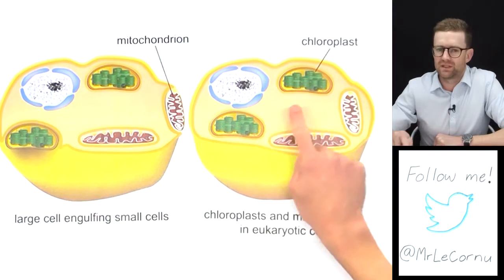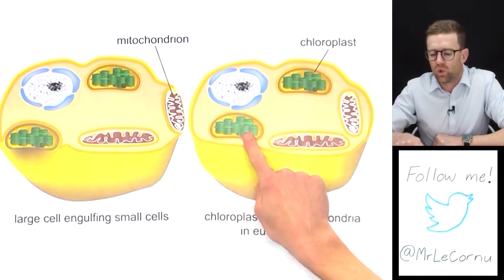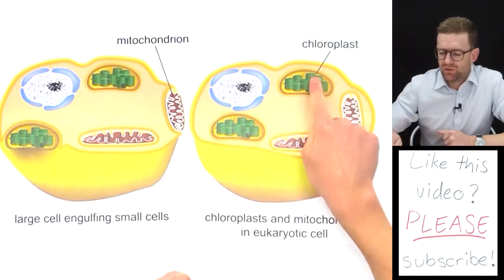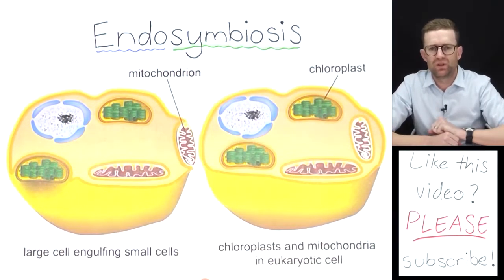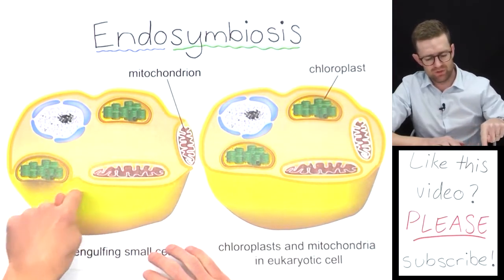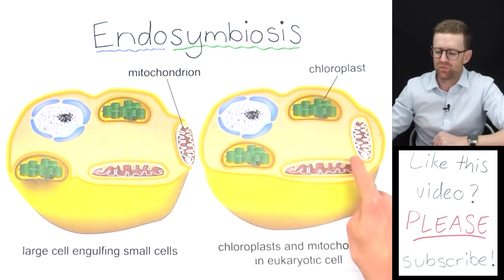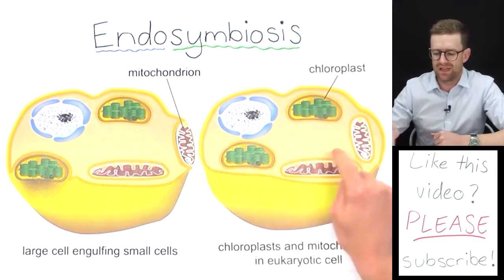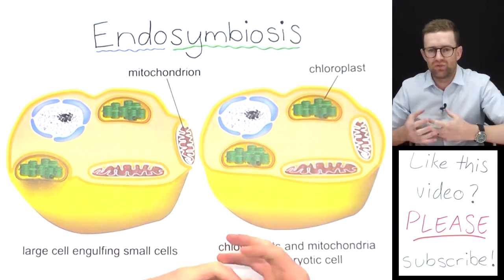After those cells were engulfed, some of those smaller prokaryotic cells may have possessed the ability to carry out photosynthesis, and others may have possessed the ability to carry out aerobic respiration. This is thought to be a possible origin of the chloroplasts and the mitochondria we see today. It's a benefit for the large cell to have cells within it that can carry out photosynthesis — providing glucose and oxygen — or aerobic respiration, which breaks down glucose using oxygen to provide energy.